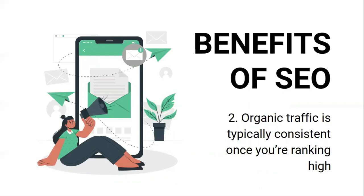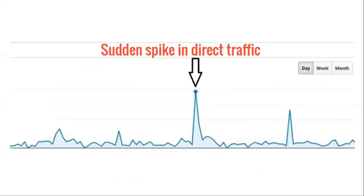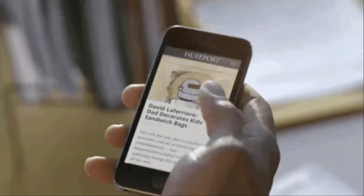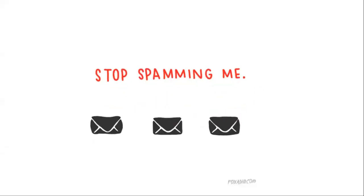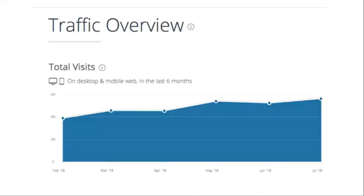Number two, organic traffic is typically consistent once you're ranking. Whereas other mediums like social media and email marketing often result in traffic spikes that usually end up fading to nothing. It makes sense because social media networks are designed to surface fresh content, and emails often get marked as read, forgotten, or land in the spam box. Whereas search traffic is a result of users actively searching for information, and the number of searches for a given topic is typically consistent month to month.